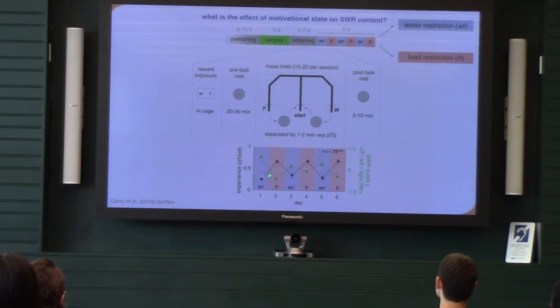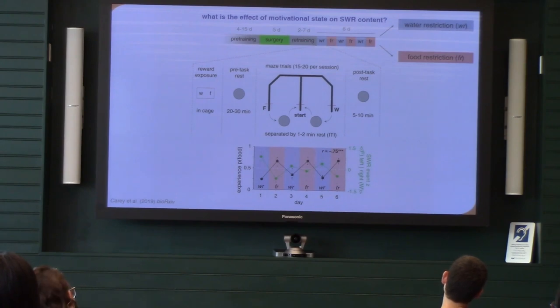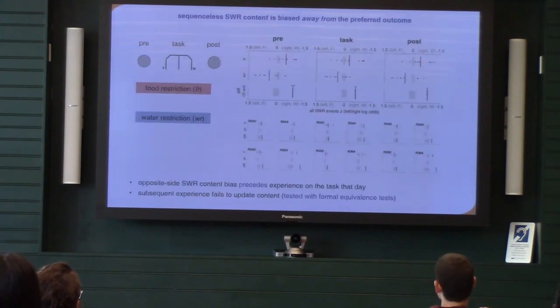So if we do all that and end up with a measure that basically says how much does the sharp wave ripple content bias towards the left or the right, you can make a plot like this where in black you see the animal's experience on the maze that day. So on the water restriction day, you know, they choose mostly food. On the food restriction day, they choose mostly food. So you get the zigzag effect. But then the surprise was that the sharp wave ripple content seemed to be anti-correlated with that behavior. So that was the first surprise. This is now averaged over the whole session. So you might say, well, maybe that's just because they're carrying something over from the previous day. Like we really need to understand on the finer time scale what does this look like.